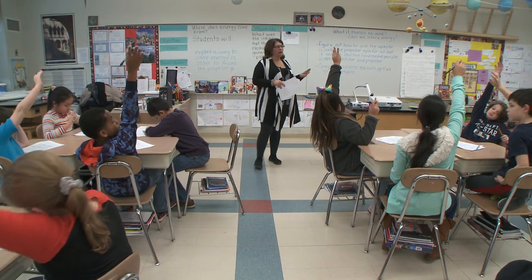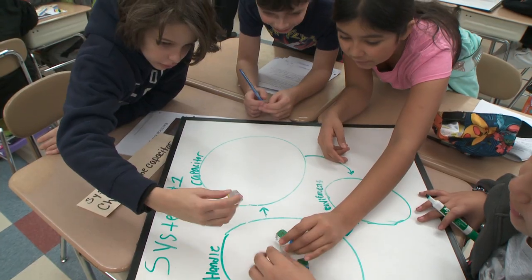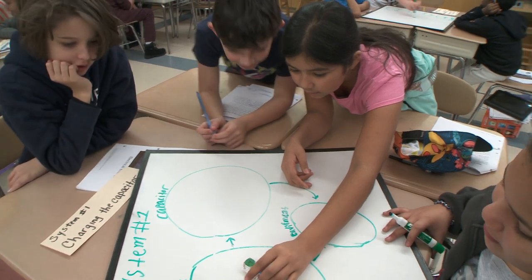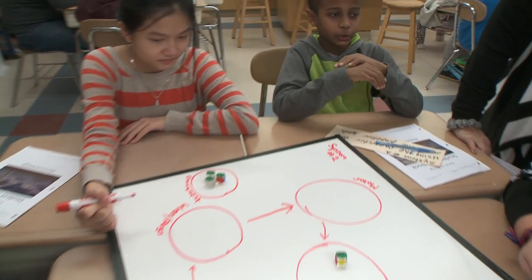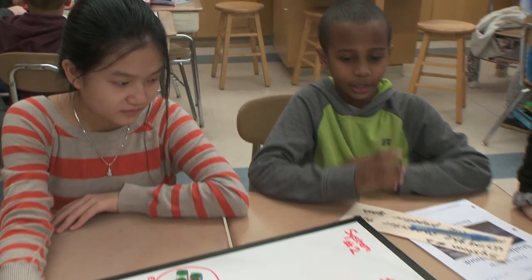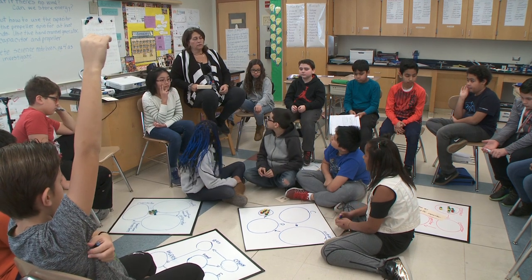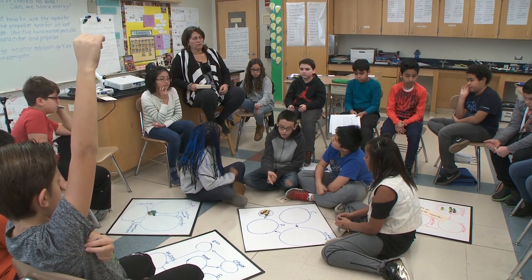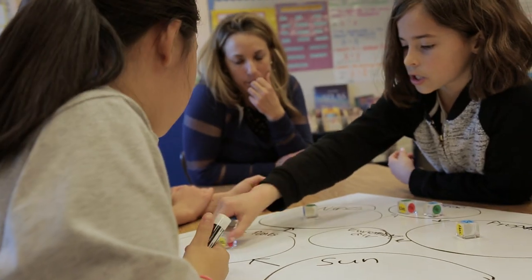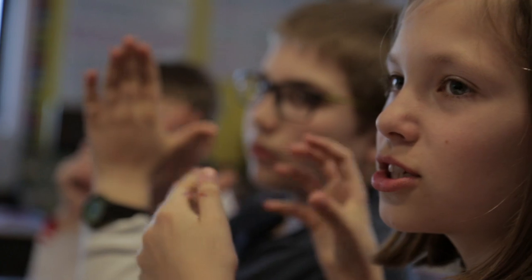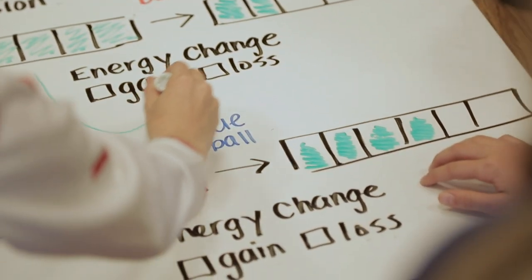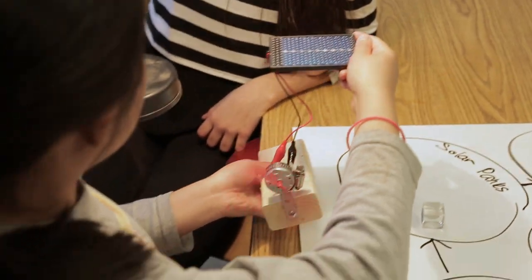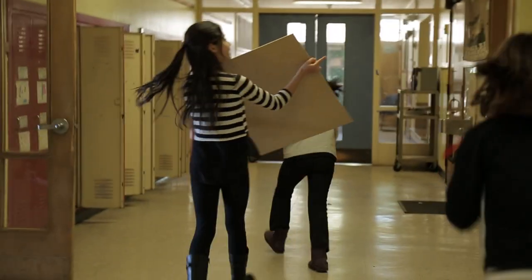These students haven't just memorized vocabulary about energy forms and processes. They're skillfully using a model of energy that they have generated themselves to construct an explanation of how energy flows through the system. This is a model the students now own. They can continue to refine it and use it to explain energy forms and flow in any field of science, as well as in everyday life.